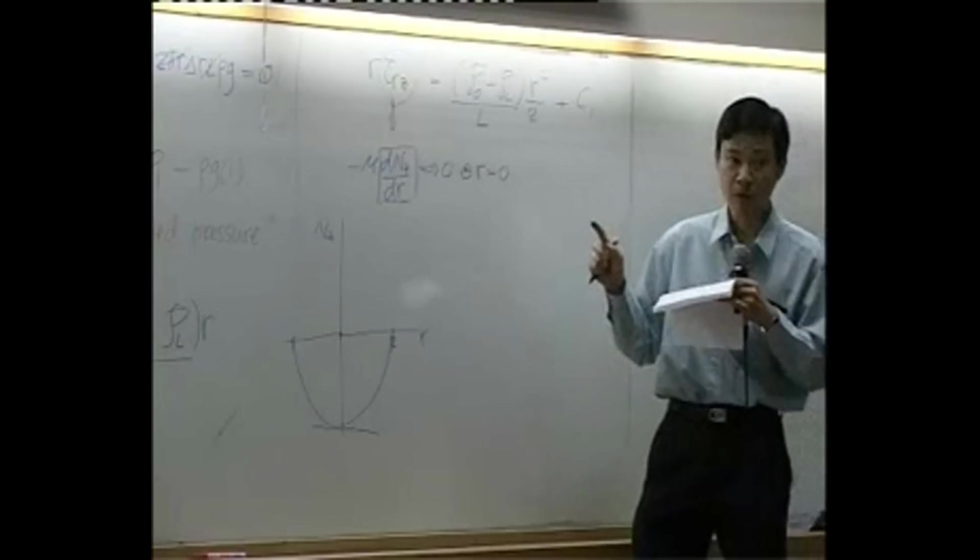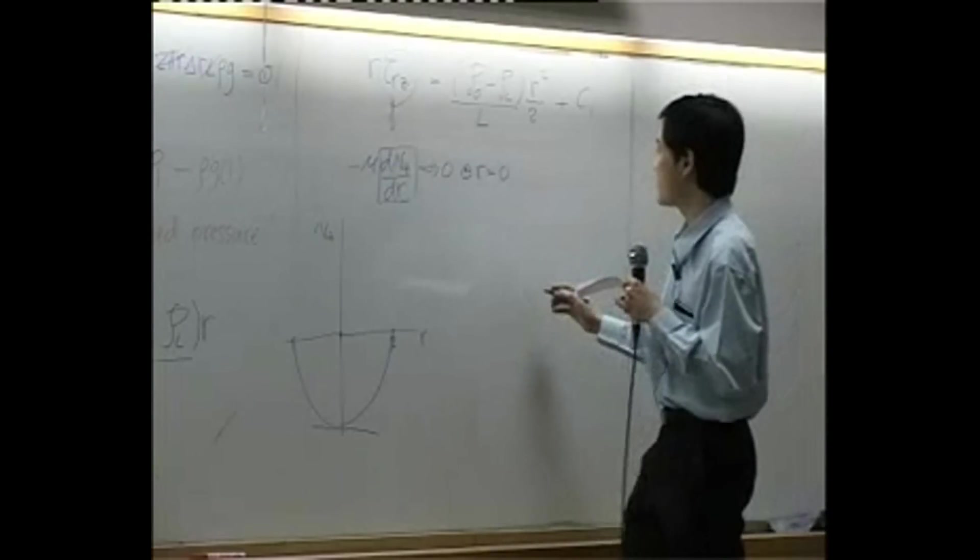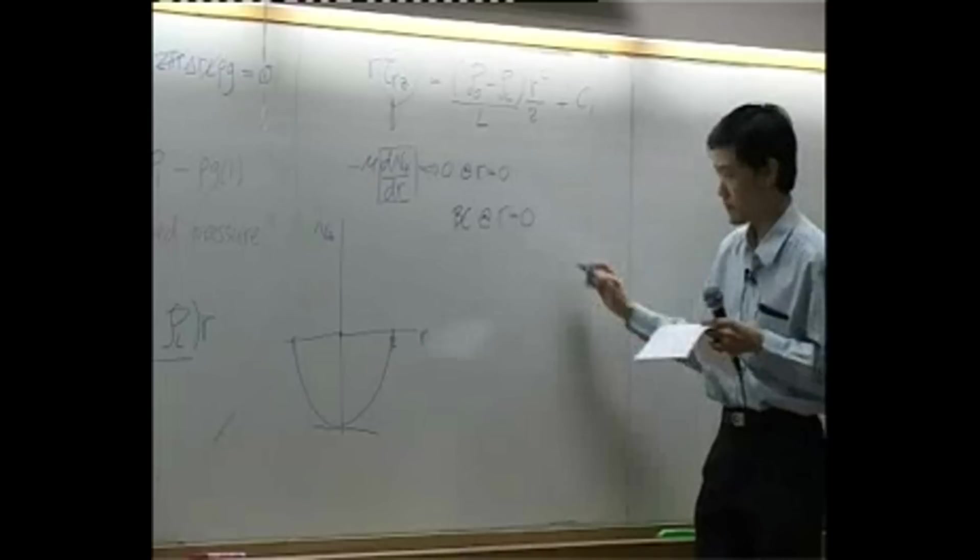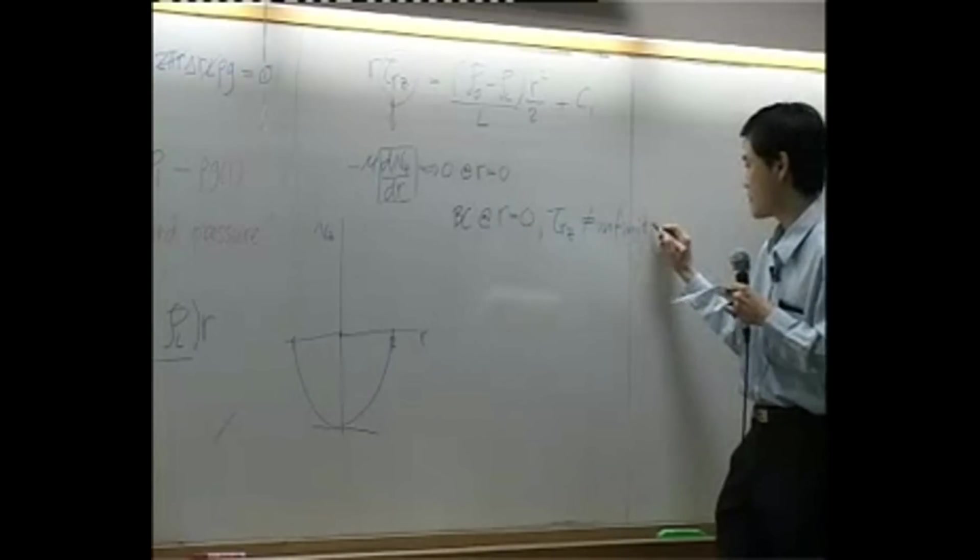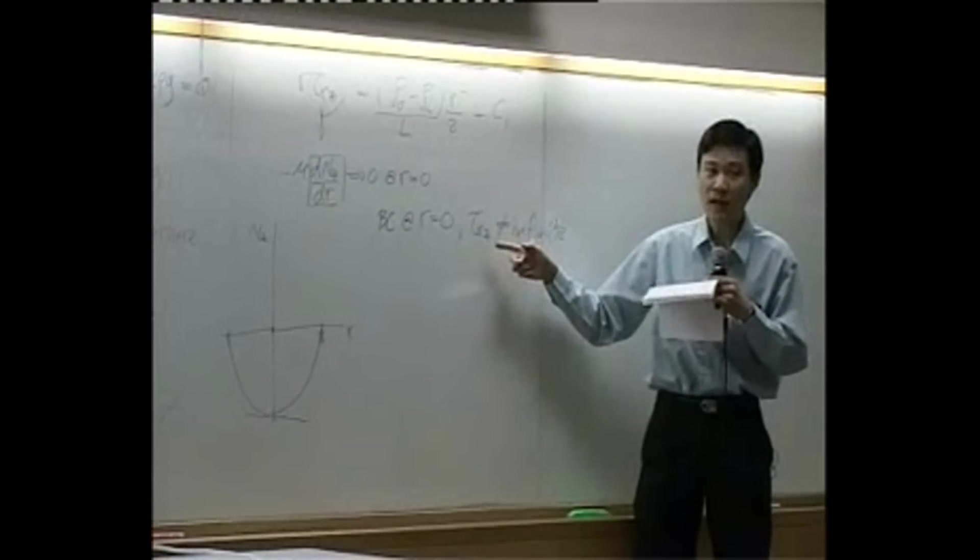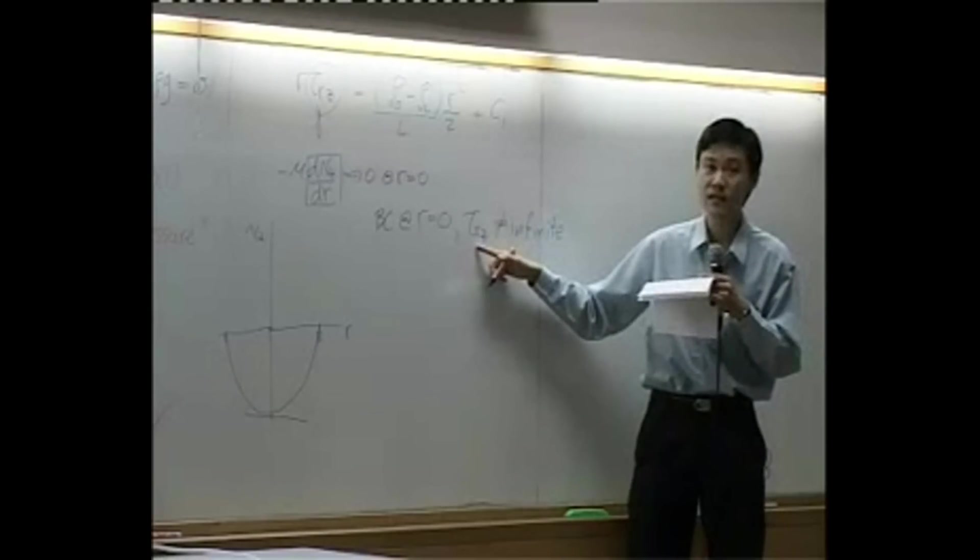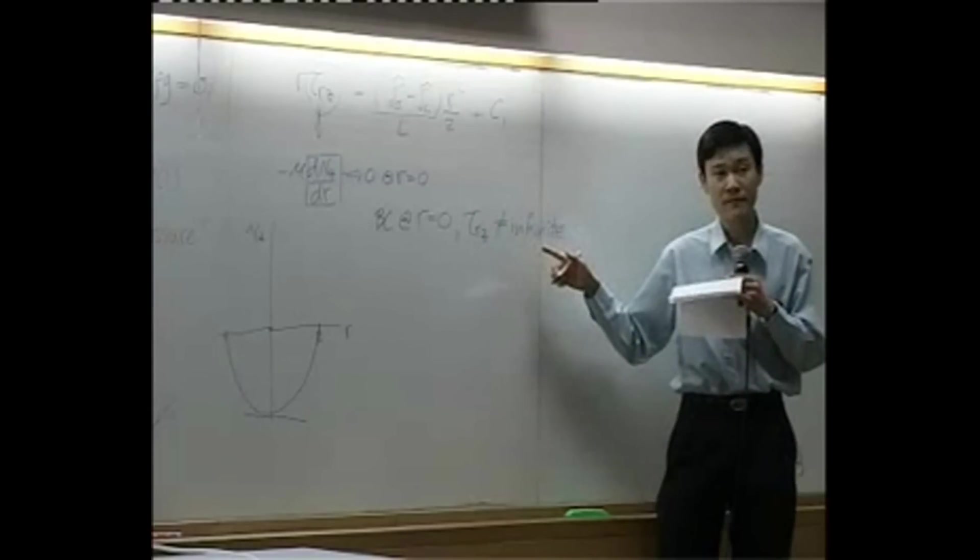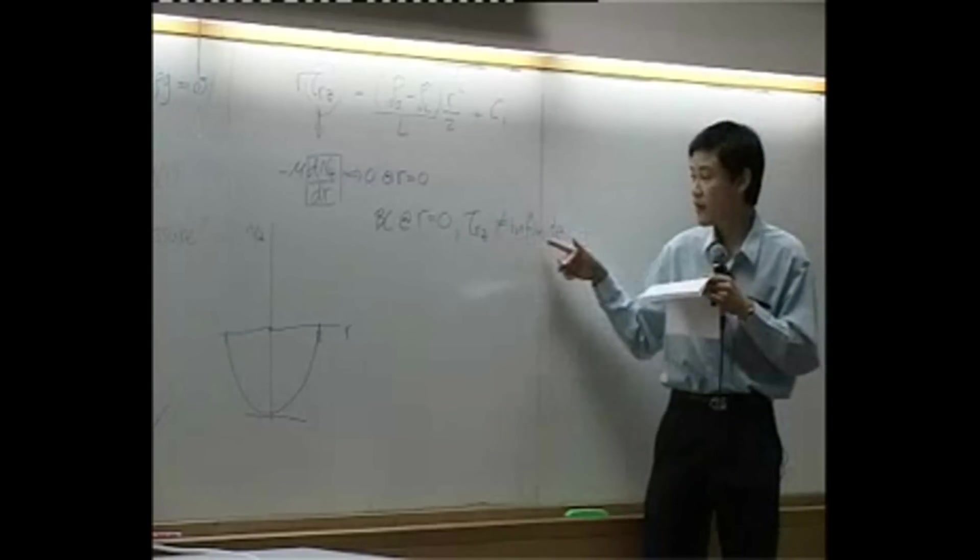But in the textbook they use another way. They will say that its boundary condition would be at r equal to zero, tau Rz is not infinite. What does it mean? We know that tau Rz is flux. You can say this one is flux. You can also say that this one is stress, it's shear stress. And shear stress can never be infinite. In a conventional system you cannot have infinite number of shear stress. So it's not infinite.